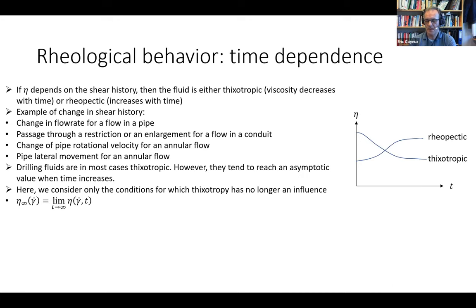The viscosity depends on shear rate and on time. Dependence on shear history — meaning time — is related to either thixotropy or rheopexy: whether the viscosity decreases with time (thixotropic) or increases with time (rheopectic). Examples of shear history impact include a change of flow rate into a pipe — oscillations of flow rate will have a shear history influencing viscous behavior if the fluid has dependence on shear history.